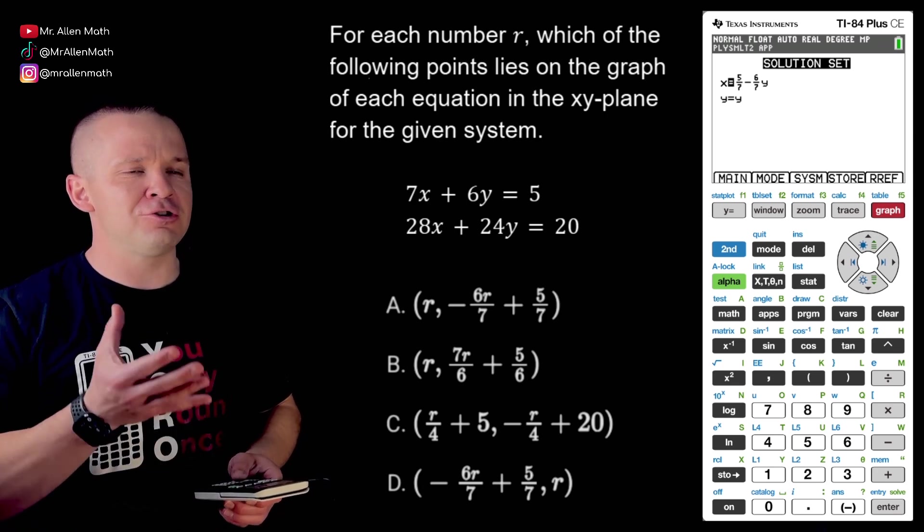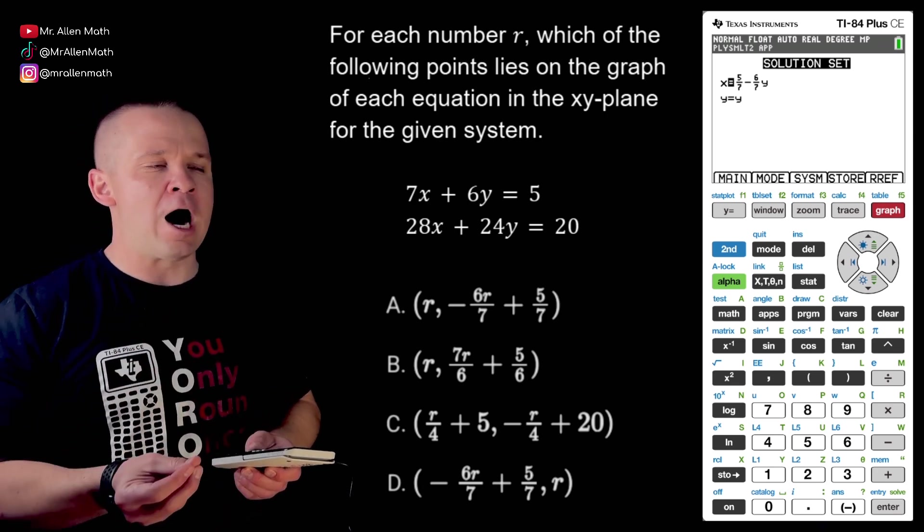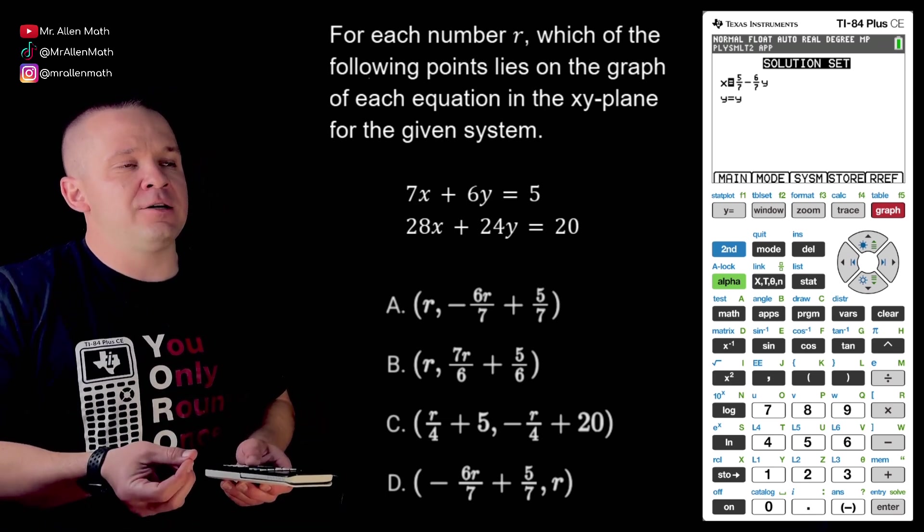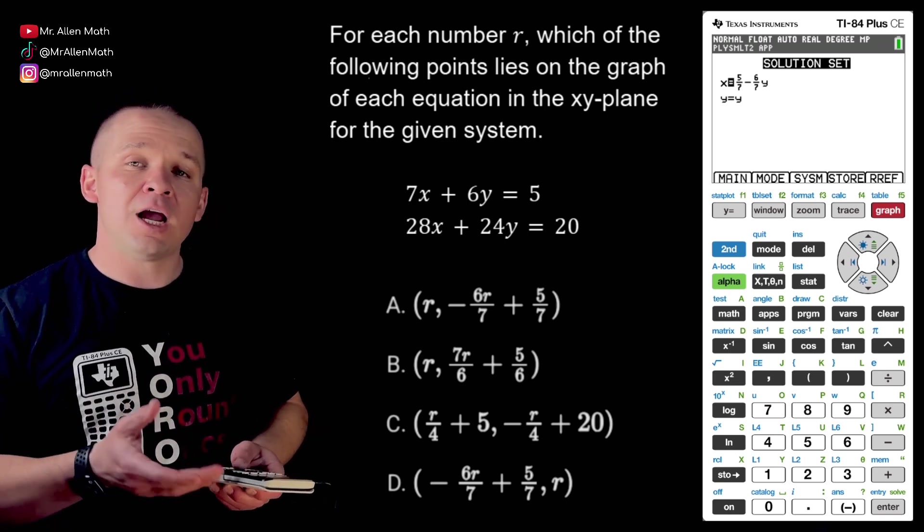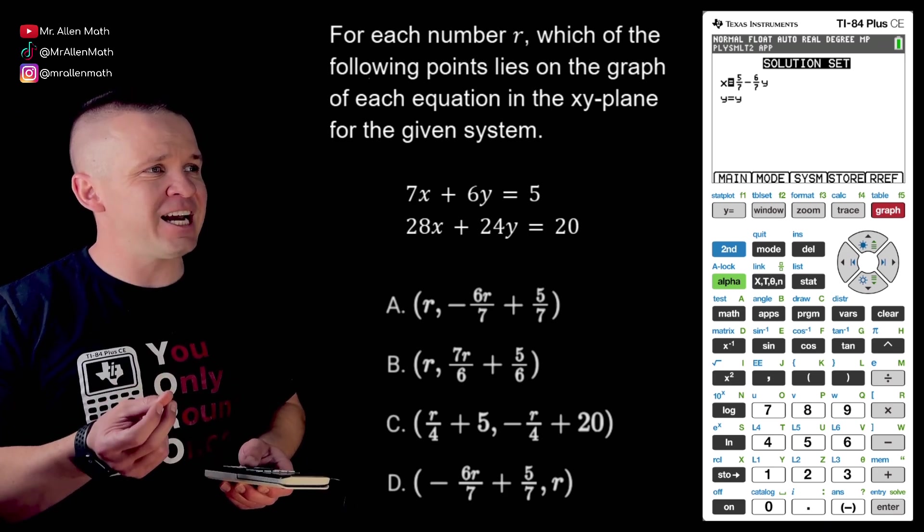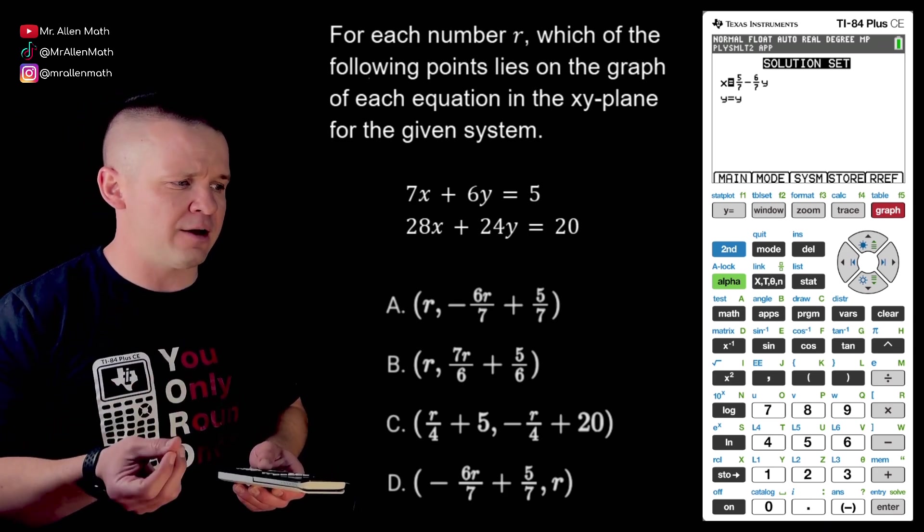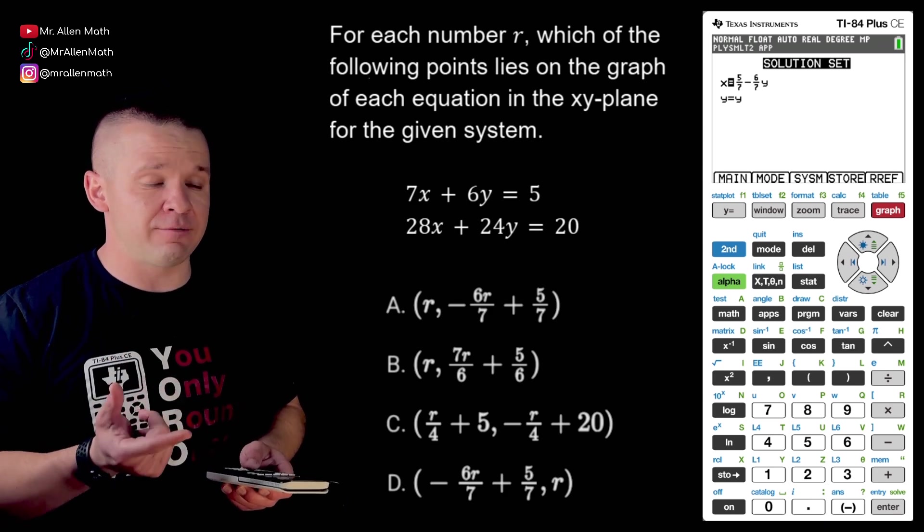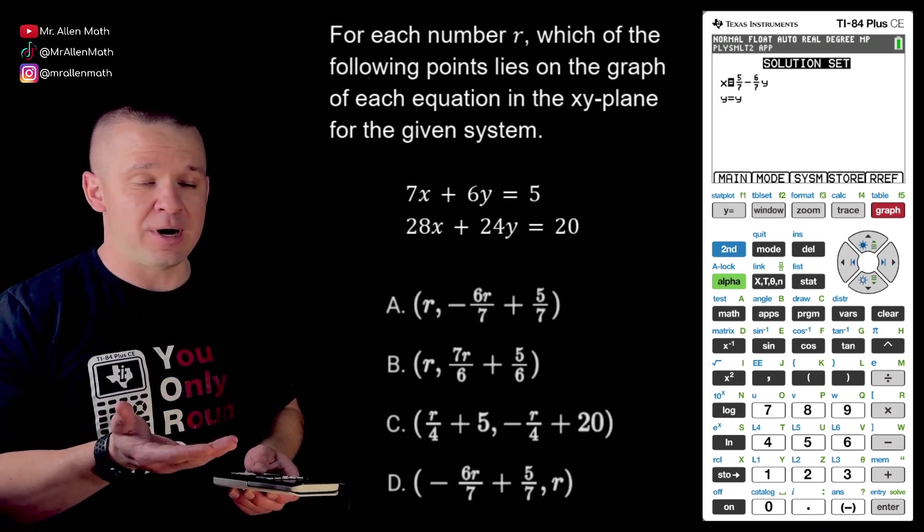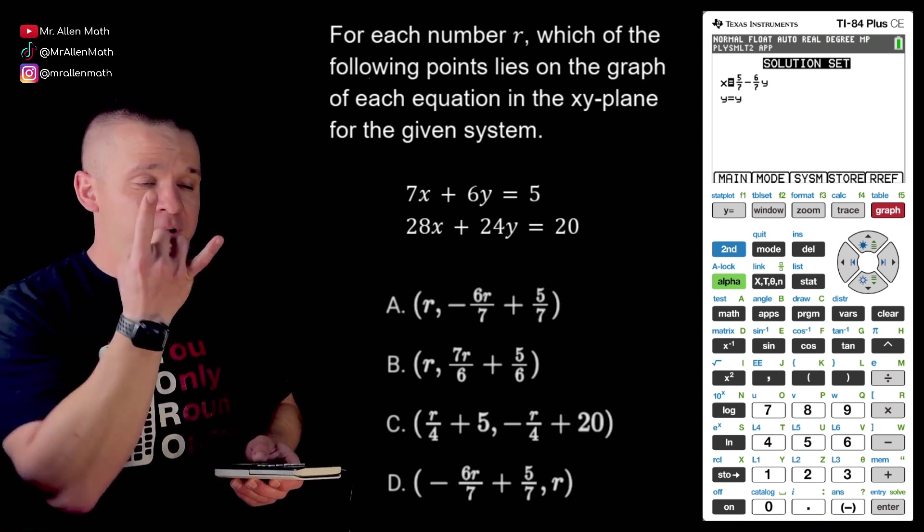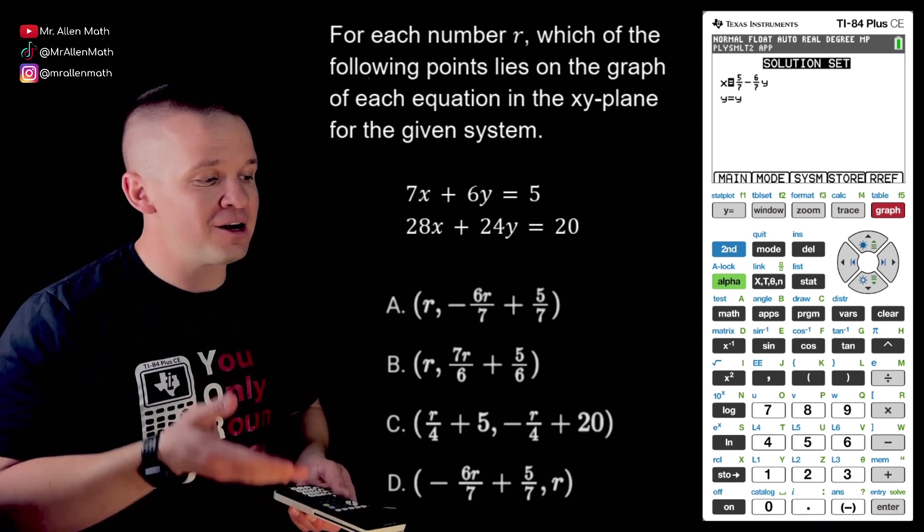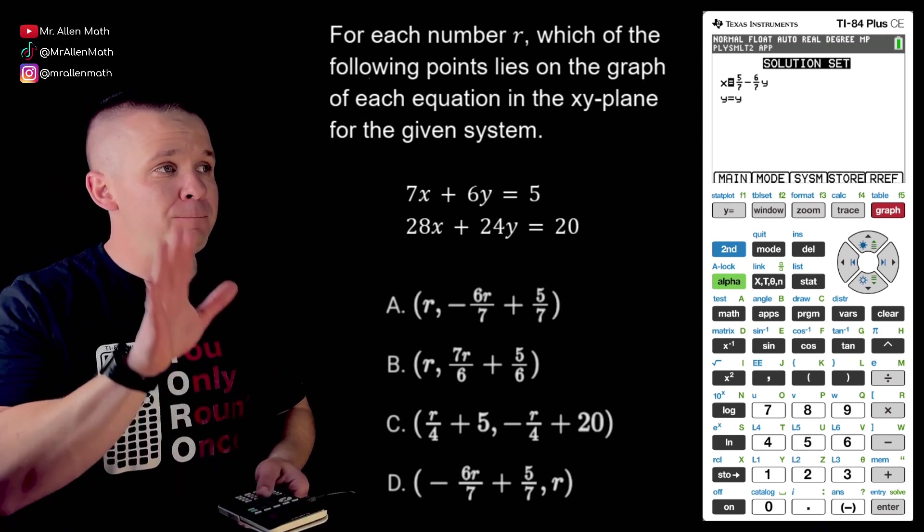So now you have to actually interpret this. So you see how it says y equals y? That's essentially the r in this particular problem. So the only choice with that is choice d where the y is just r. And look at our x coordinate. The first part, the algebraic expression in terms of r, says negative six over seven r, negative six r over seven, which is what we have for x here: negative six over seven y. Remember I said y is r here. And then it has plus five sevenths and it's positive five sevenths. So this guy's just flipped around: five sevenths minus six over seven y, but that's our answer. Our choice is d here.